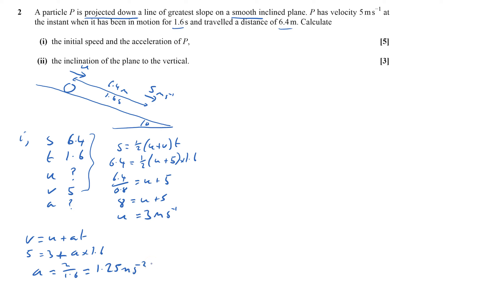That's the first bit. Now the inclination of the plane to the vertical. This is going to be a force type problem, so I'm going to put the forces on here. There's the weight going straight down which is mg, and then this normal contact force going up which is R.